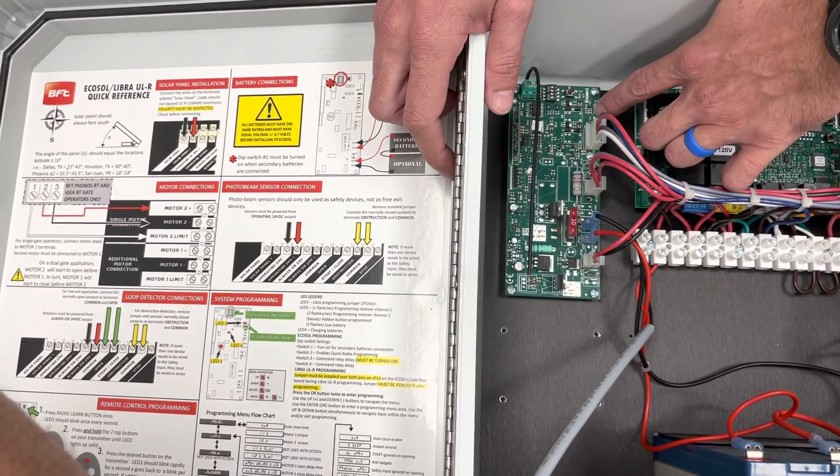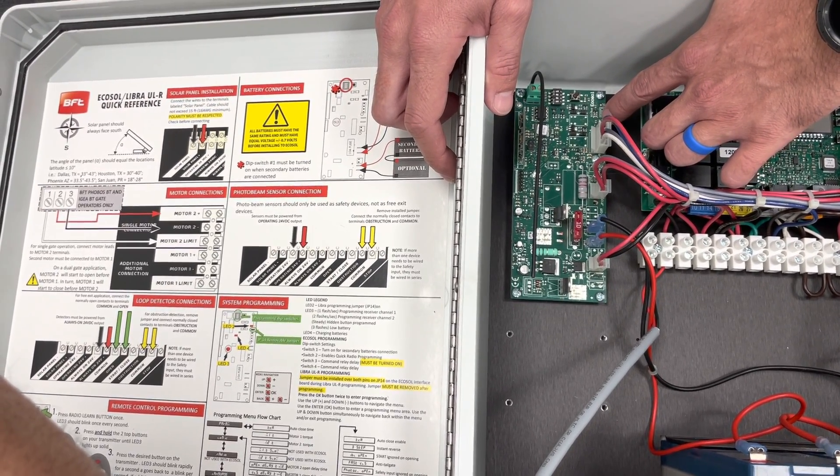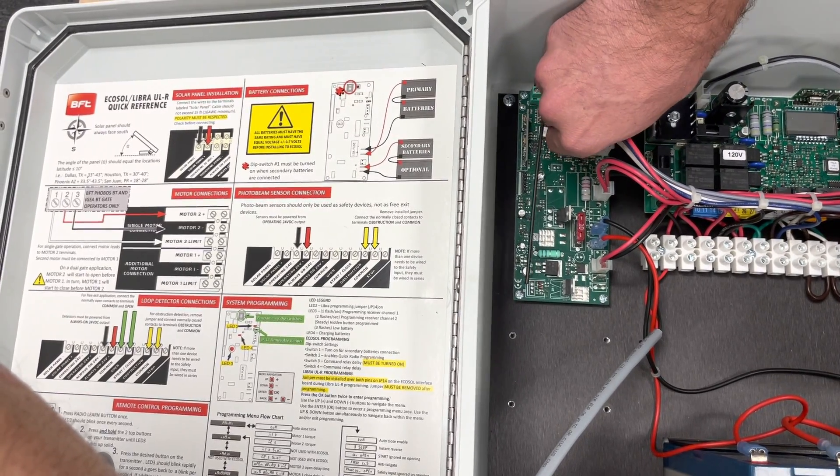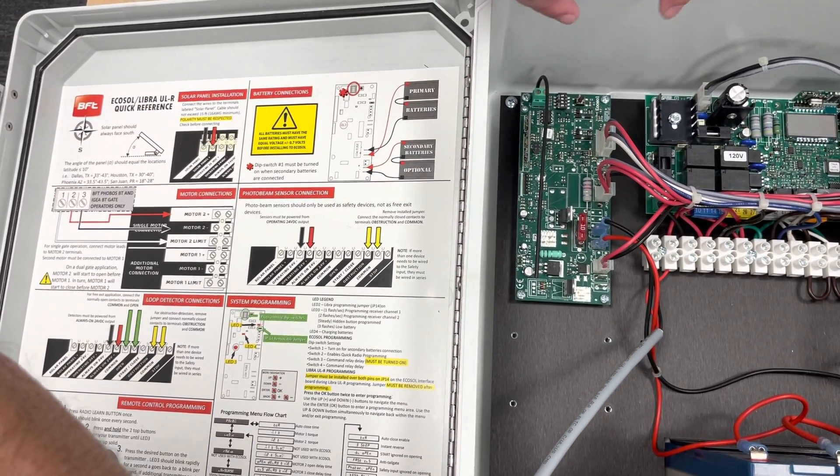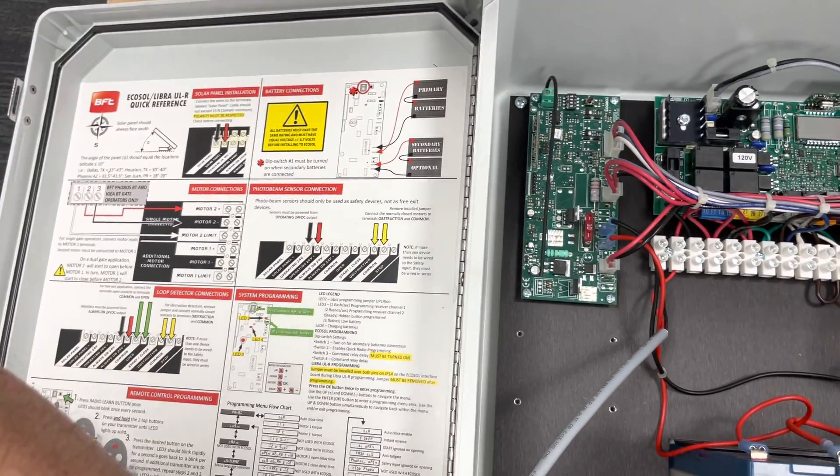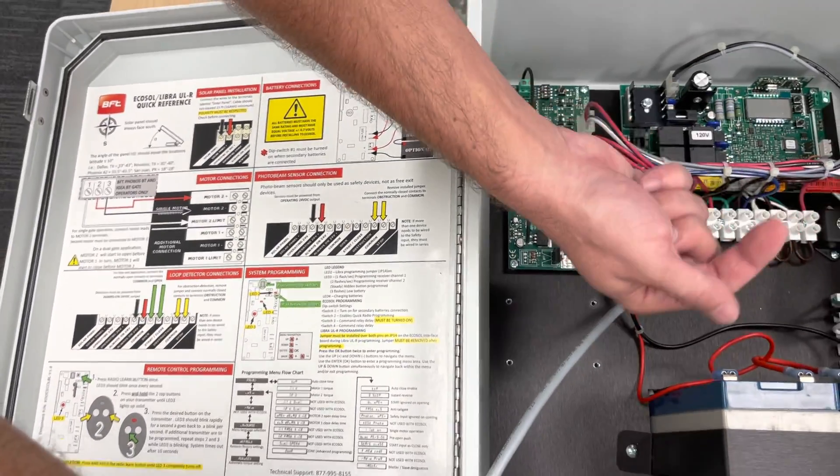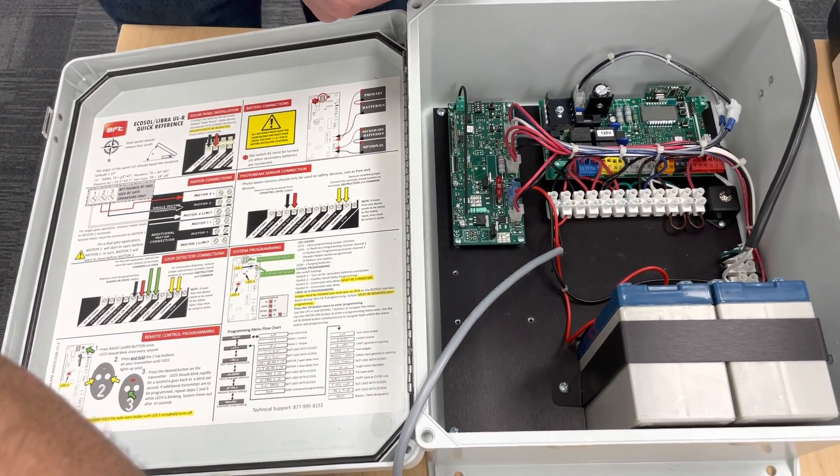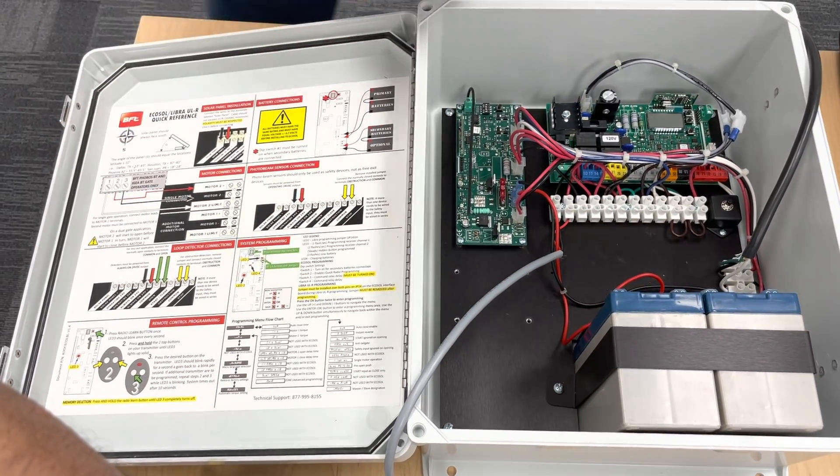And then our last LED is your DL2 light. This one's important. You got to make sure you pay attention to this. This light is actually for your JP14 jumper. And what that does is it applies constant power to your Talia board. And that is so we can program. You want to check out our Phobos video here on top to go over mounting and programming. I will go over a quick programming now in a second. Let me get this jumper in.